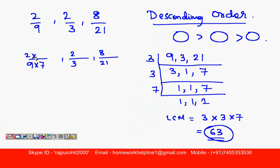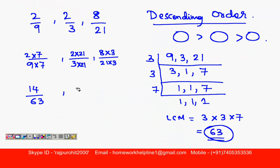Here also you multiply by 7. 3 will be multiplied with 21 to get 63; this also will be multiplied with 21; 21 will be multiplied with 3 to become 63; this also will be multiplied with 3. Now 2 sevens are 14 upon 63, this will become 2 into 21 that is 42 upon 63, and 8 threes are 24 divided by 63.